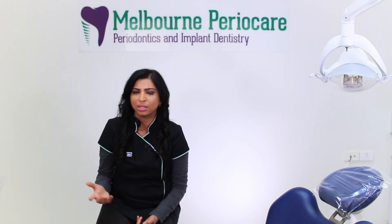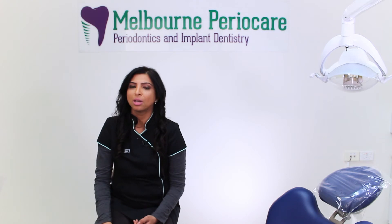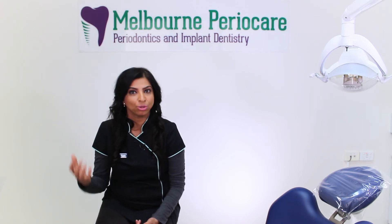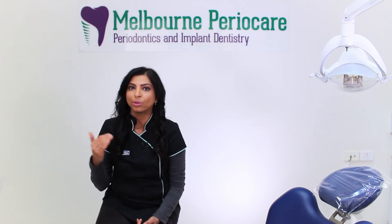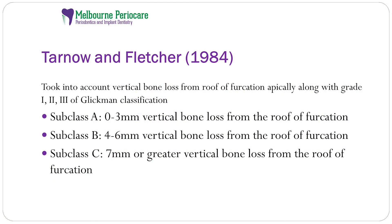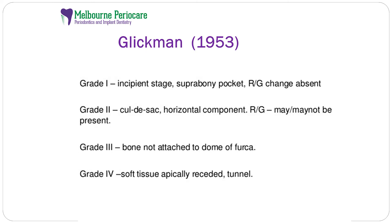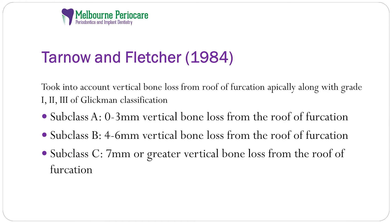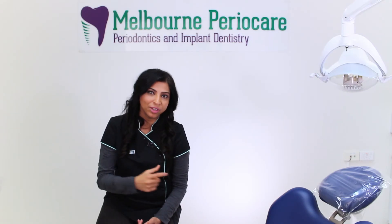How is this important? These classifications have a strong bearing on how we are going to treat furcation involvement and on the prognosis of the teeth. For example, subclass A is a happier tooth than subclass C. A grade two subclass A has a better prognosis than a grade two subclass C. But a grade three subclass A still has a better prognosis than a grade two subclass C because it has lesser vertical bone loss. That is where classification helps us.